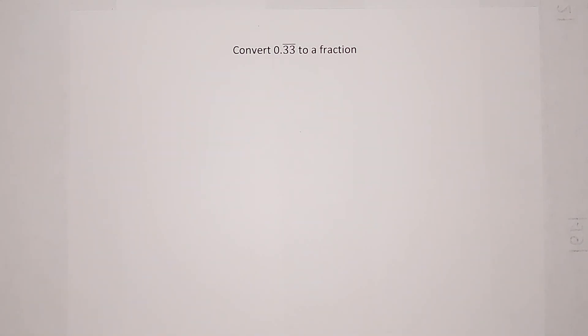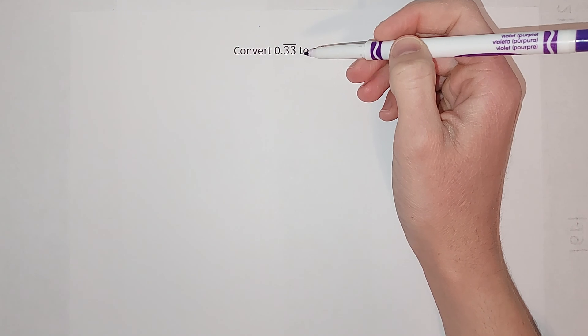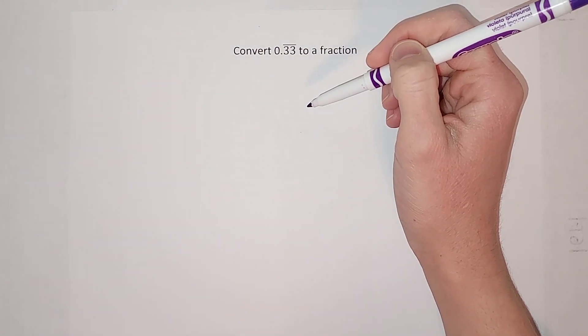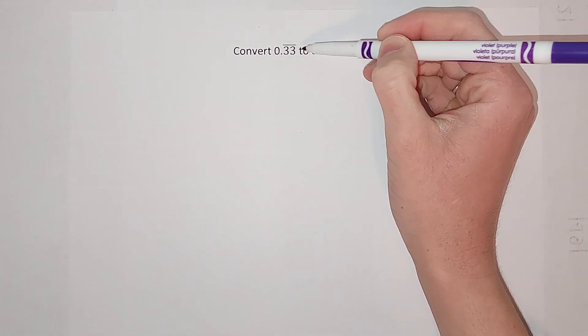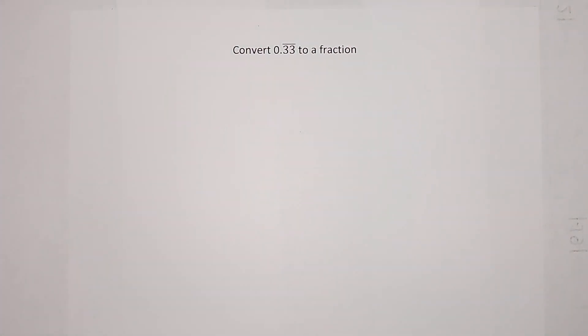So it says convert 0.33 with a line over it to a fraction. If you don't know, the line over the 0.33 means that the threes keep repeating forever. When I say forever, I really mean that 0.3333 forever. Obviously we can't write that out, so they put that little line over it. Now this can be converted to a fraction, but our normal trick of being able to do that doesn't work with this.